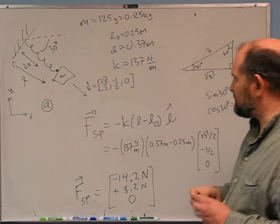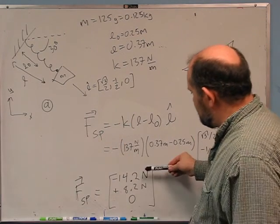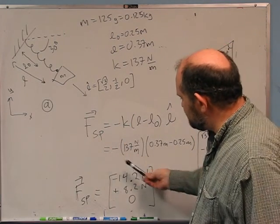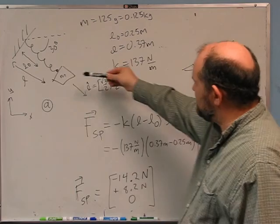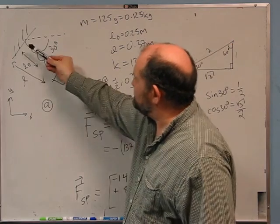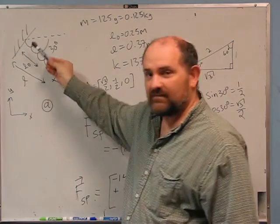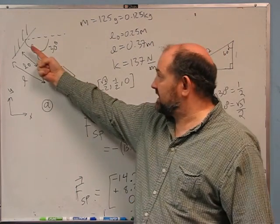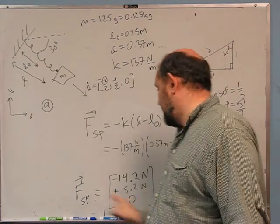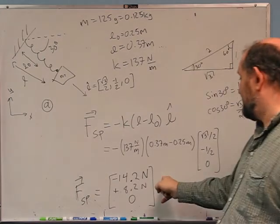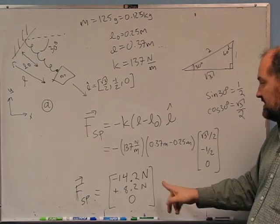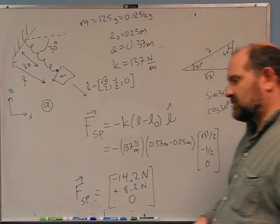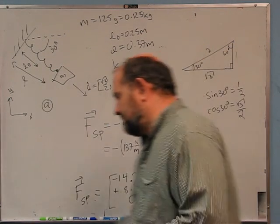If you think about the direction — it's negative in x and positive in y, and that is what we expect: going up that way would be negative x and positive y. So the force came out in the right direction. That's the spring force.